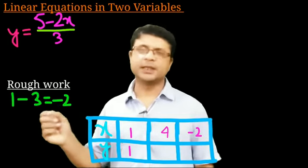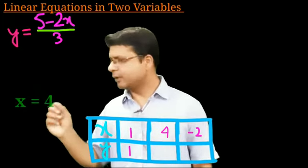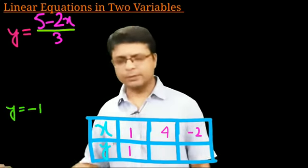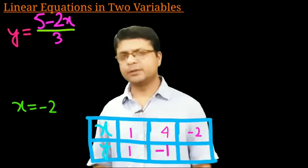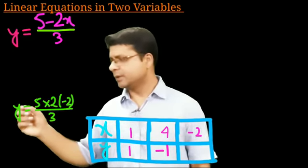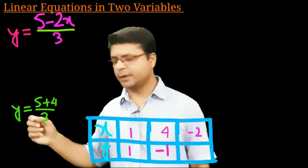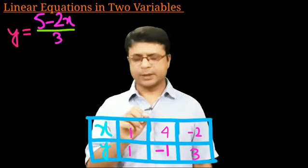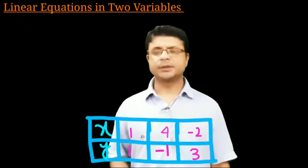When x = 4: y = (5 − 8) / 3 = −3/3 = −1. When x = −2: y = (5 − 2×(−2)) / 3 = (5 + 4) / 3 = 9/3 = 3. So our three solutions are (1, 1), (4, −1), and (−2, 3).